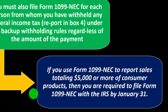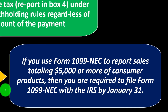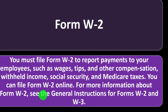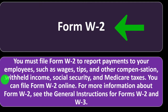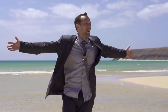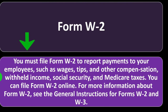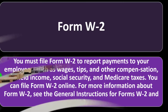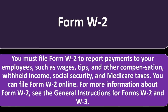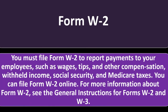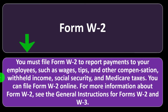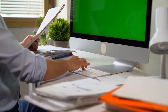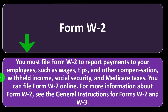If you use Form 1099 NEC to report sales totaling $5,000 or more of consumer products, you are required to file Form 1099 NEC with the IRS by January 31st. Then we've got Form W-2 — the form we all know. You must file Form W-2 to report payments to your employees such as wages, tips, and other compensation, withheld income, social security, and Medicare taxes. You can file Form W-2 online. If you have employees instead of contractors, you have a larger reporting requirement with the W-2 form, and you are required to make withholdings for federal income tax, social security, Medicare taxes, the payroll taxes, and possibly state taxes.